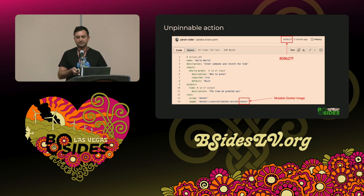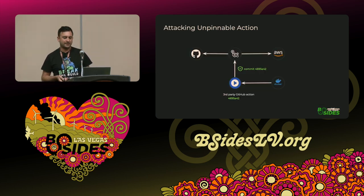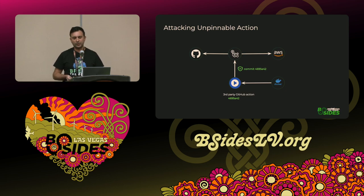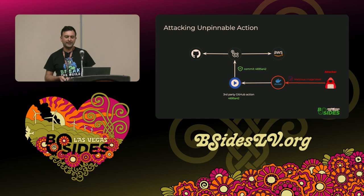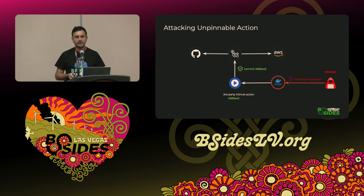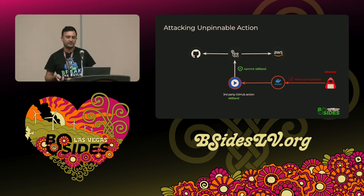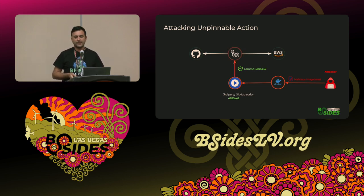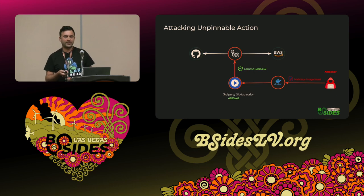Going back to the drawing one last time — here we have the same workflow pinned against the commit hash, but our attacker this time can take another approach: try to take over the Docker container registry of this action and push a new malicious image with the latest tag, which will then run inside the third-party GitHub action, flowing all the way to the workflow, and from there to the repository or the production environment.